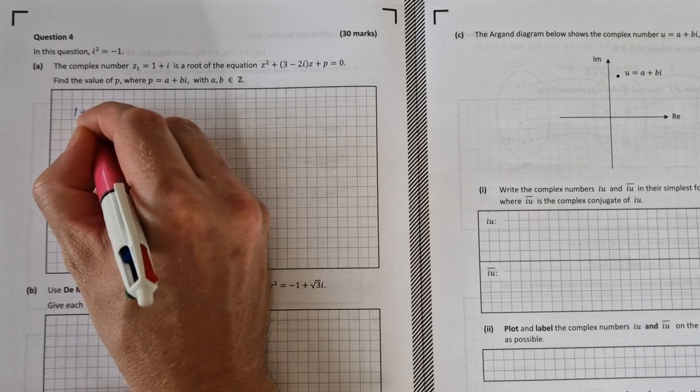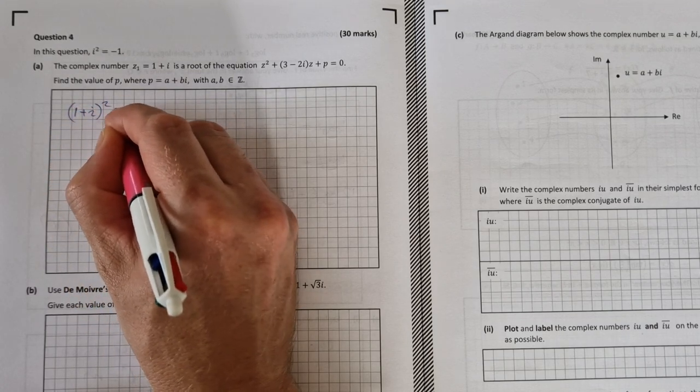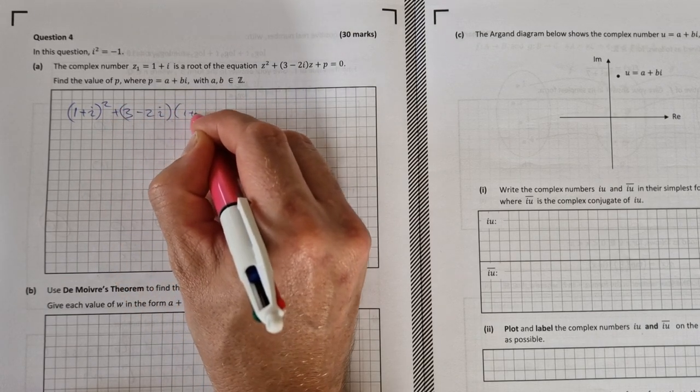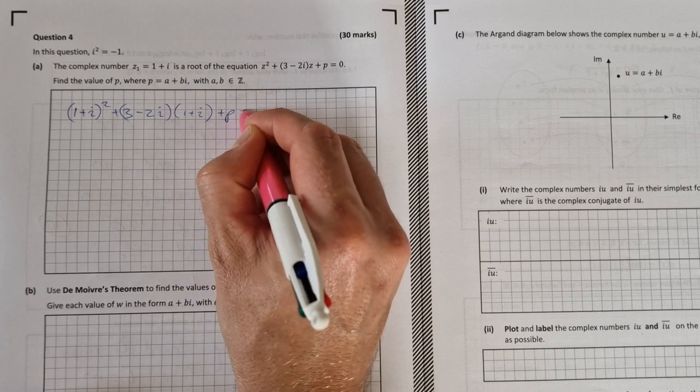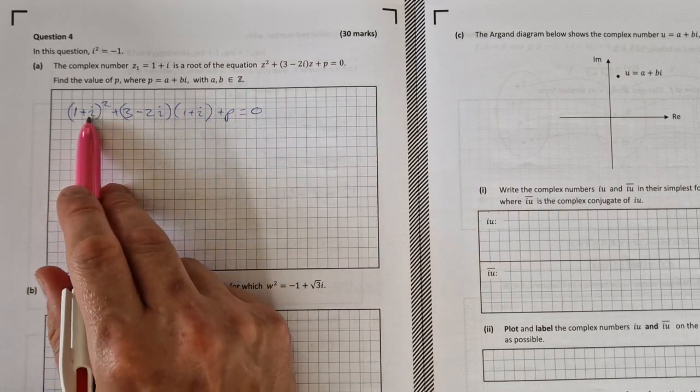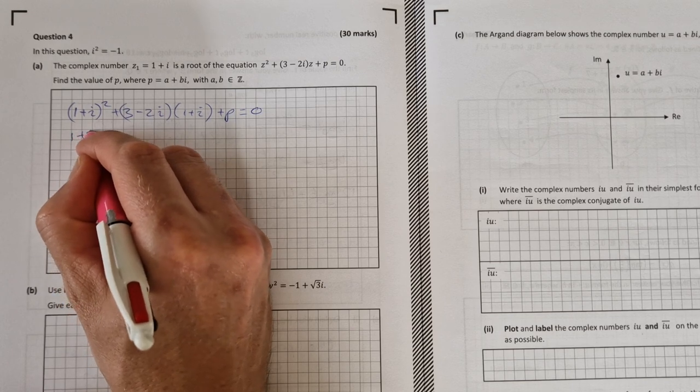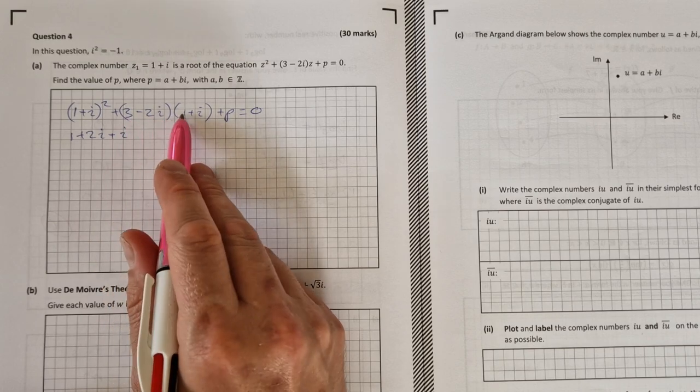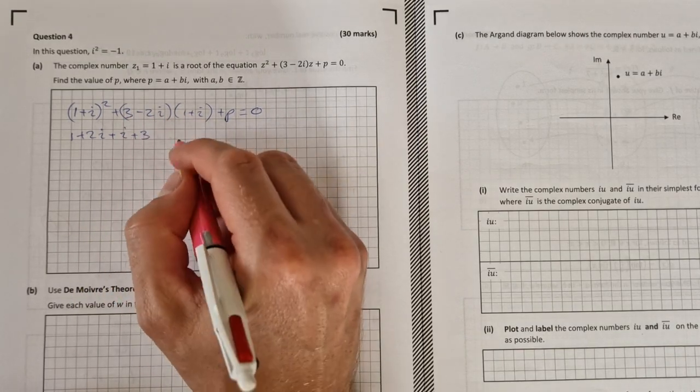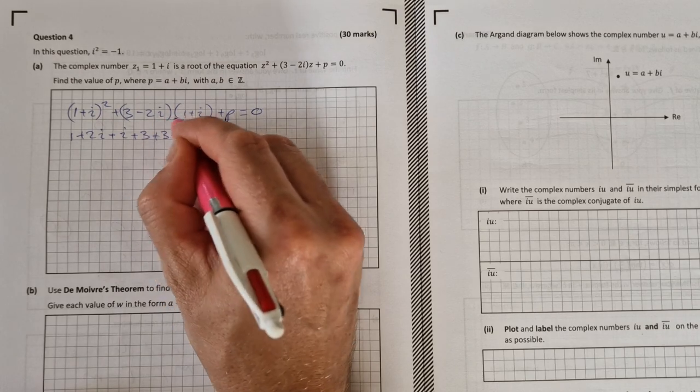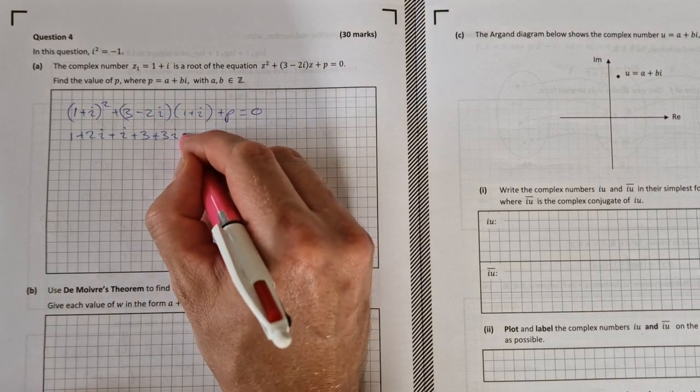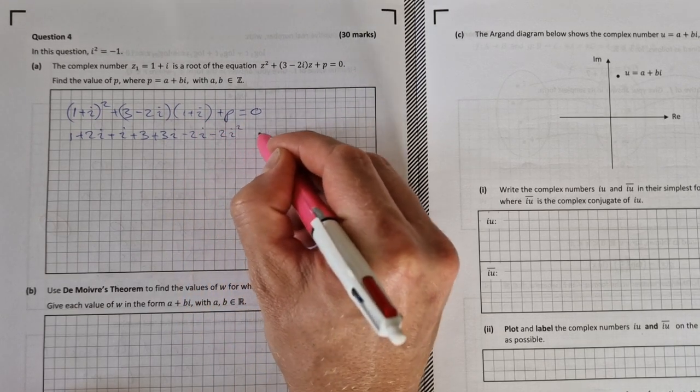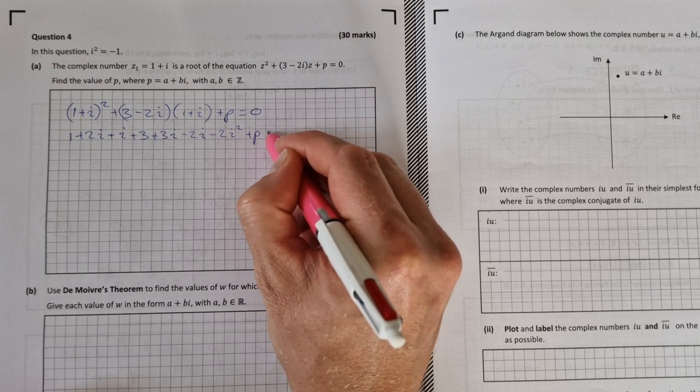So that would be (1 plus i) squared plus (3 minus 2i) times (1 plus i) plus p equals 0. If we square this out we'd get 1 plus 2i plus i squared. Multiplying this out we'd get 3 by 1 is 3, 3 by i is plus 3i, minus 2i by 1 is minus 2i, and minus 2i by i is minus 2i squared, and then plus p equals 0.